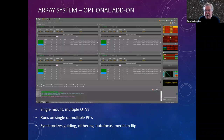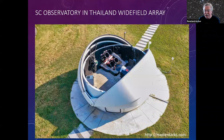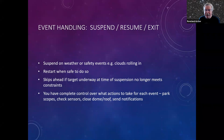There's also an array system — if you want to run more than one OTA on a single mount you can do that with Voyager, running it all on one PC or multiple PCs. If you're imaging the same target from multiple OTAs, you don't want one scope dithering while another is taking pictures, so this synchronizes things like autofocus, meridian flip, and guiding changes so they don't interfere with pictures on any single scope. This is one of the professional observatories in Thailand that was probably the first adopter of the wide-field array system.